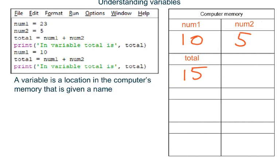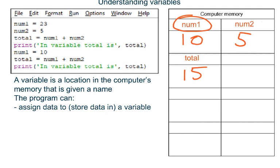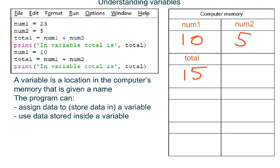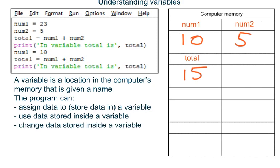Remember, a variable is a location in the computer's memory that is given a name — for example, num1. The program can assign data to, that means store data in, a variable — for example, 10. The program can use data stored inside a variable — for example, using data stored in variable num1 and data stored in variable num2. The program can change data stored inside a variable — for example, it changes what is stored in variable num1, and it changes what is stored in variable total. Variables are called variables because the program can vary, change what is stored inside them.